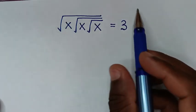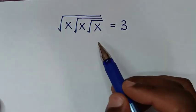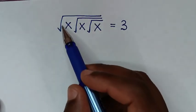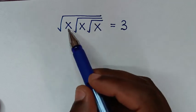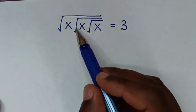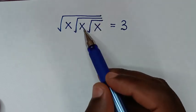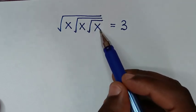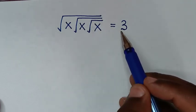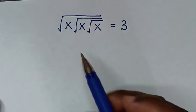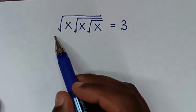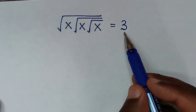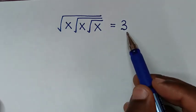You are welcome to solve this math problem, which is the square root of x under square root of x under square root of x, is equal to 3. We need to find the value of x from this equation.